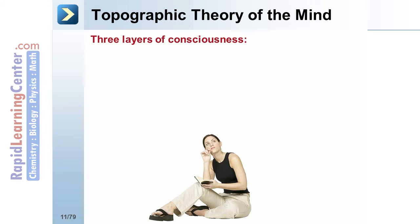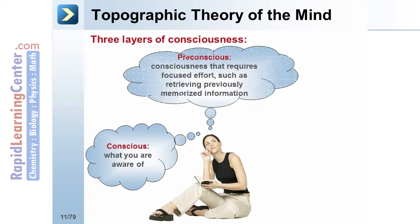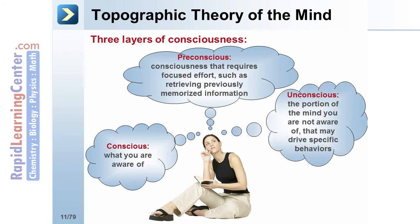The topographic theory of the mind is similar to Freud's structural theory in its presumption of three layers of consciousness. They are: the conscious, which is what you are aware of; the pre-conscious, consciousness that requires focused effort such as retrieving previously memorized information; and the unconscious, the portion of the mind you are not aware of that may drive specific behaviors.